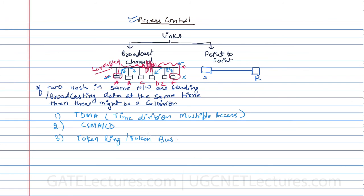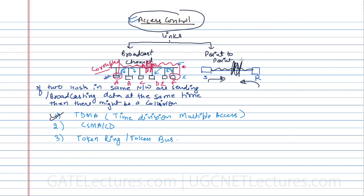We also have Token Bus, which will be discussed as well. We'll be starting with TDMA — Time Division Multiple Access. To revise: access control means if a sender and receiver want to send data at the same time simultaneously, there may be a collision and the data will get corrupted. So we should not give access to more than one host to send data in parallel. Let's now discuss TDMA — what is Time Division Multiple Access.